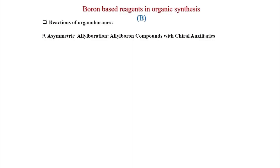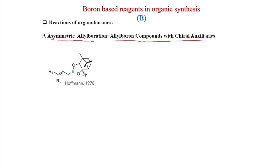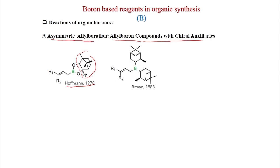First we will discuss boron based reagents in organic synthesis and asymmetric allyl boron. From yesterday's class we saw different carbon bond formation; here we will discuss allyl boron compounds with chiral auxiliaries. A chiral auxiliary was first discovered by Hoffman in 1978, where a chiral diol was reacted with a boronic acid derivative and incorporated into the allyl system.